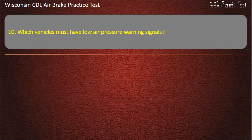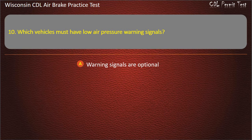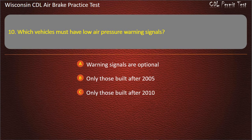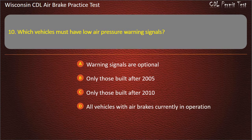Question 10. Which vehicles must have low air pressure warning signals? Warning signals are optional. Only those built after 2005. Only those built after 2010. All vehicles with air brakes currently in operation. Answer: All vehicles with air brakes currently in operation.